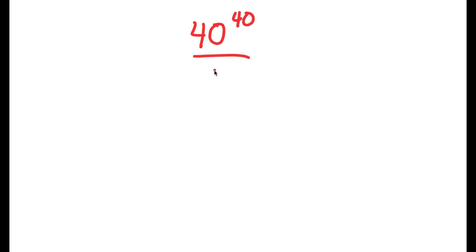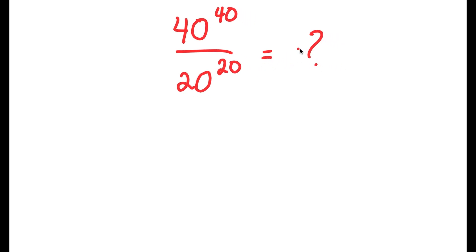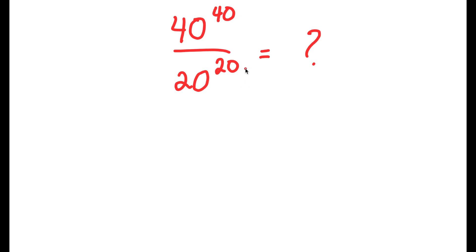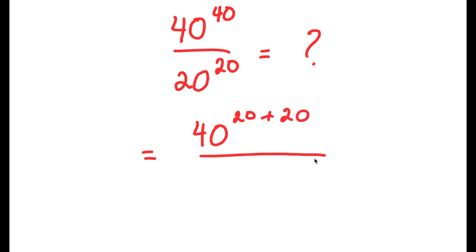In this video, I'm going to solve the problem 40 to the power of 40 over 20 to the power of 20. To start off, I'm going to write 40 to the power of 40 as 40 to the power of 20 plus 20, and I have this over 20 to the power of 20.